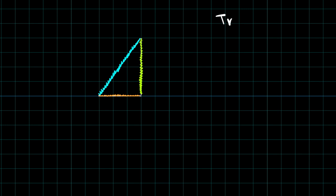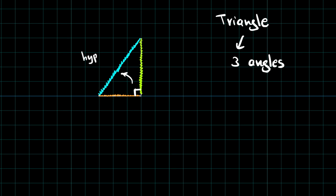So there are three sides to a triangle. The story is also about three angles. The first angle is the 90 degree angle. Opposite to 90 degrees is the hypotenuse.